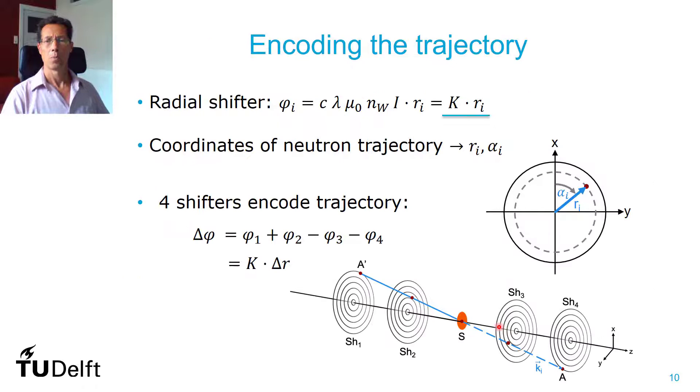Now, to calculate it, you will get a precession that will depend on the position where the neutron goes through the shifter. Now, you can completely define the trajectory of the neutron by the radius which goes through the shifter and which angle, with respect, for example, to the x-axis.